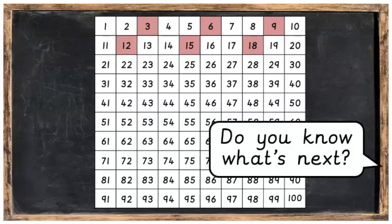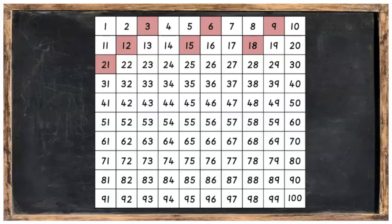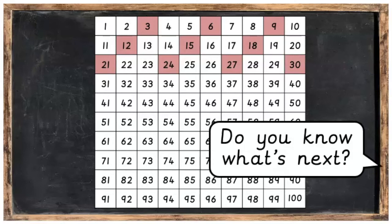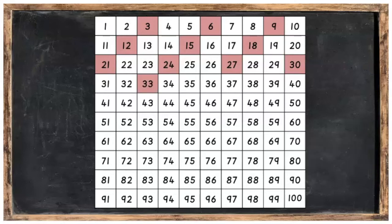Do you know what's next? After eighteen, we're going to land on twenty-one. Then we'll land on twenty-four. Then, twenty-seven. Then, thirty. And, do you know what's next after thirty? Well done. Thirty-three, then thirty-six, and finally we'll stop with thirty-nine.